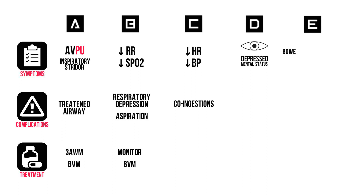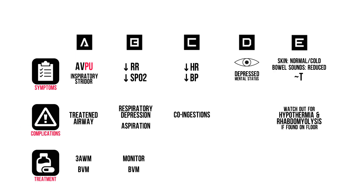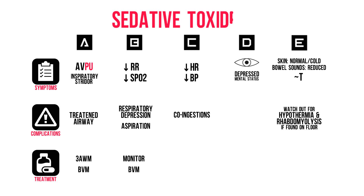In E: bowel sounds are reduced, but there is no ileus. Body temperature is normal, but beware of hypothermia and rhabdomyolysis if patients have been lying on the floor for an unknown period of time. Their skin feels normal to cold. Through our ABCDE assessment, we've determined this is a sedative toxidrome — all vitals are downregulated and the patient has normal pupils. We can thus anticipate possible complications like respiratory depression.